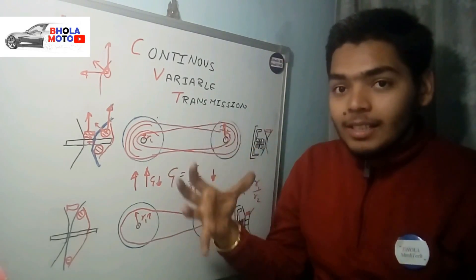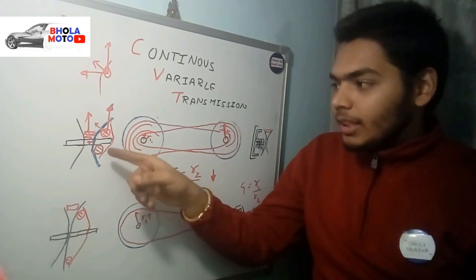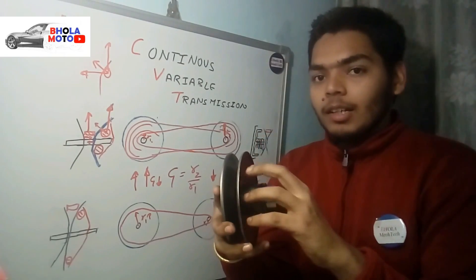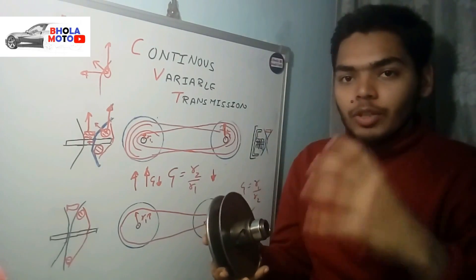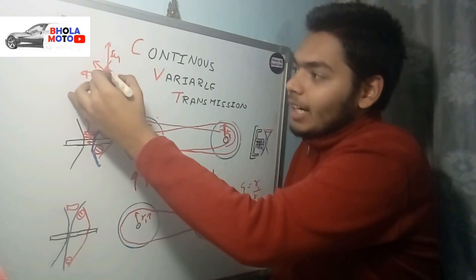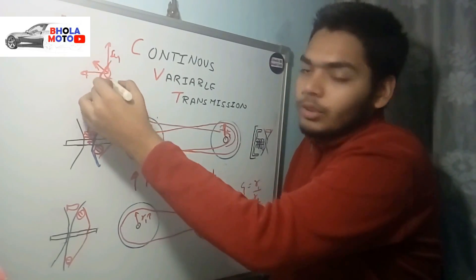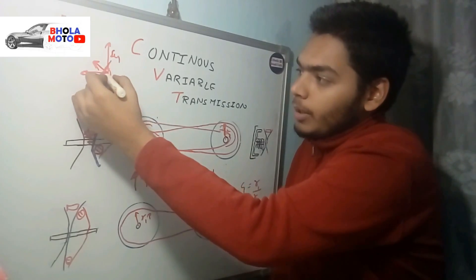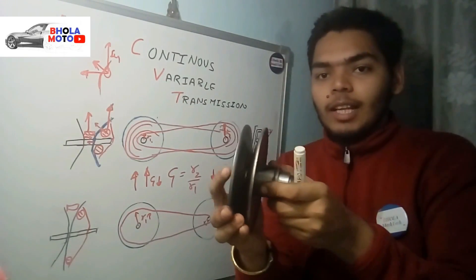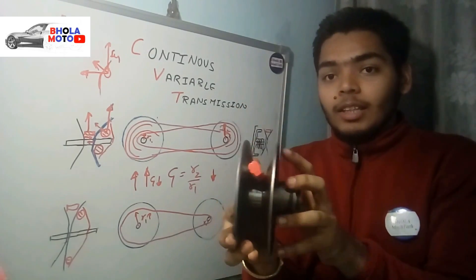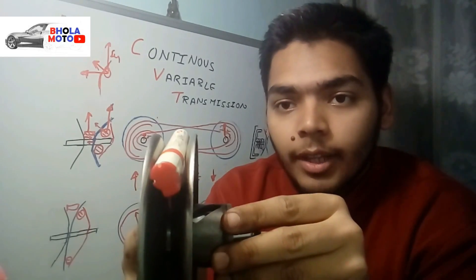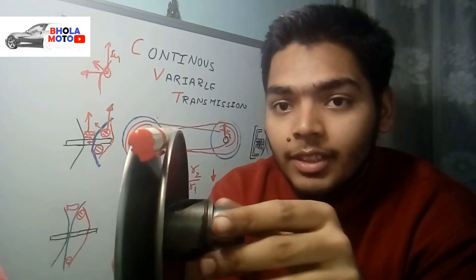The driver pulley is connected to the engine and has a cover with several weights inside it. When the engine rotates at higher RPM, centrifugal force is imparted on these weights outward. This force acts on the face of the pulley, pushing that part of the pulley inward. Initially the pulley rests in a lower position, but when the weights push inward, the belt rises on the driver side, increasing the driver pulley radius.